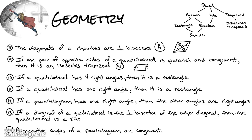Number ten: if a quadrilateral has four right angles, then it is a rectangle. That is always true — that is the way of proving you have a rectangle.